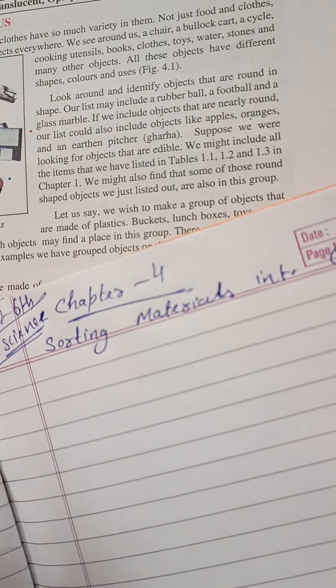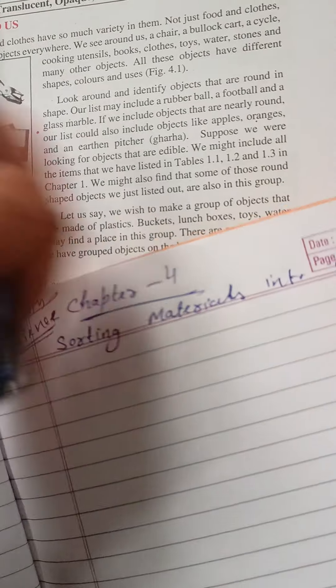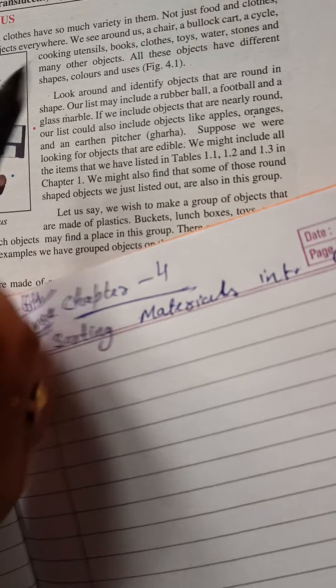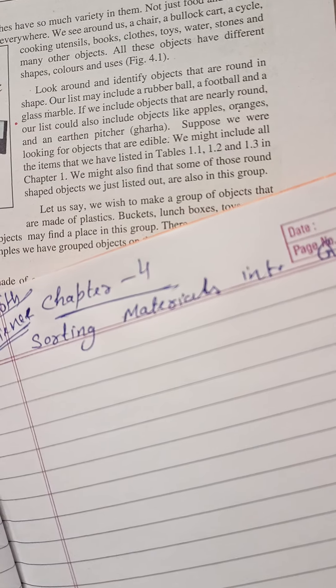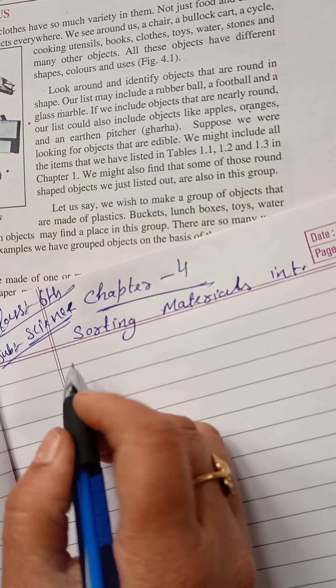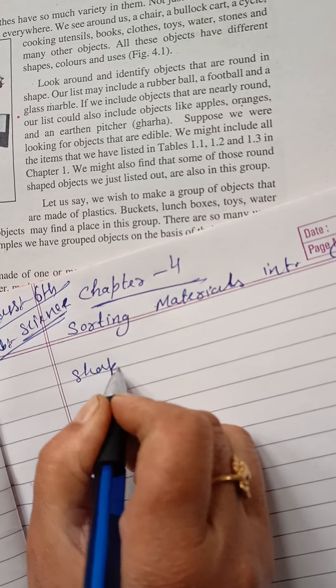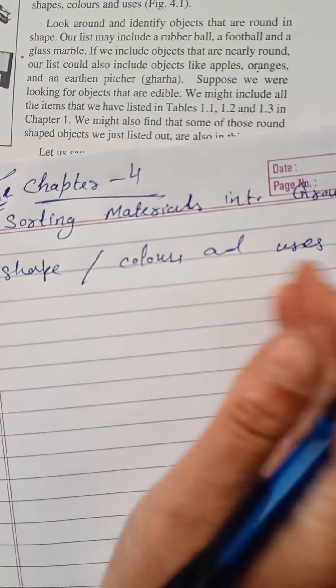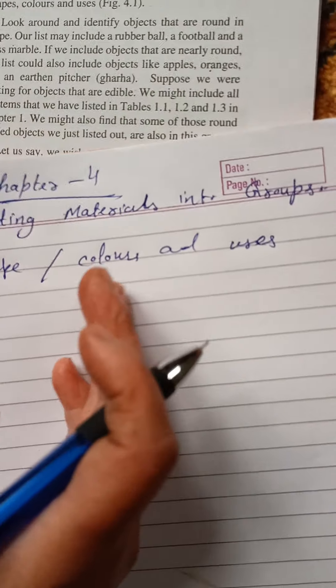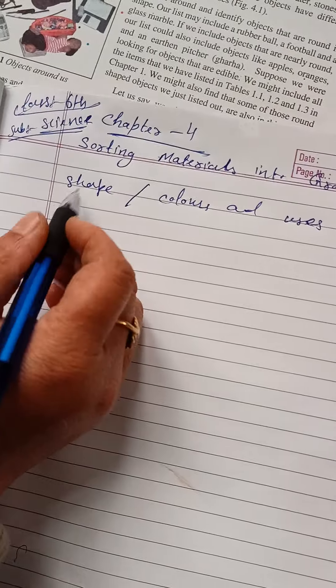All these objects have different shapes, colors, and uses. The color is different, the use is different. Utensils are for cooking - the color, shape, size can be triangle or different shapes. Look around and identify objects.